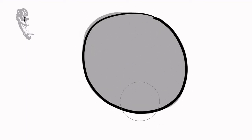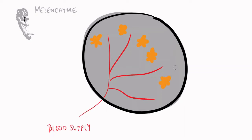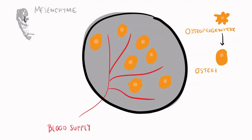Let's take intramembranous ossification first. This upper left image shows the basic mesenchymal skeleton; we'll isolate one bone and look at a cross section of the mandible. Mesenchyme is well vascularized, and blood brings nutrients and other factors that lead to the differentiation of osteoprogenitor cells. This blood supply brings factors that lead to the differentiation of the osteoprogenitor cells into osteoblasts.